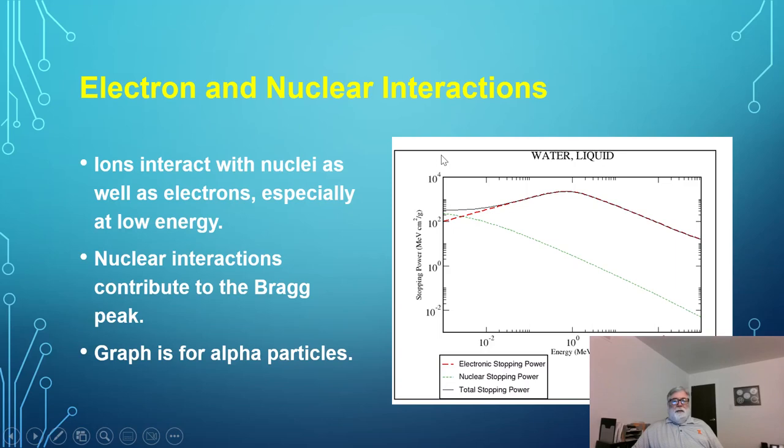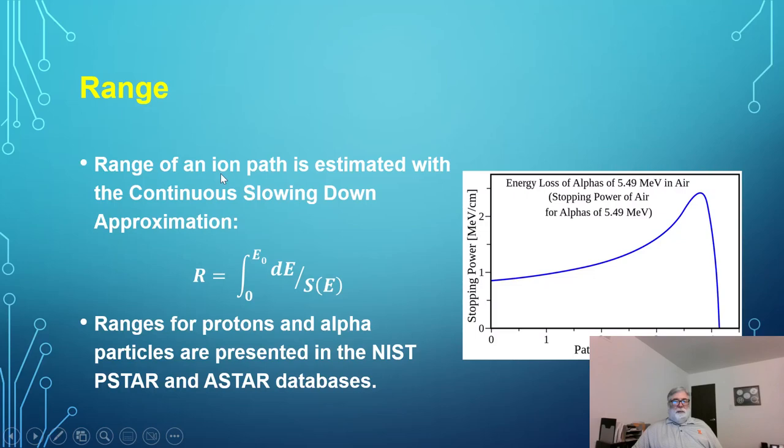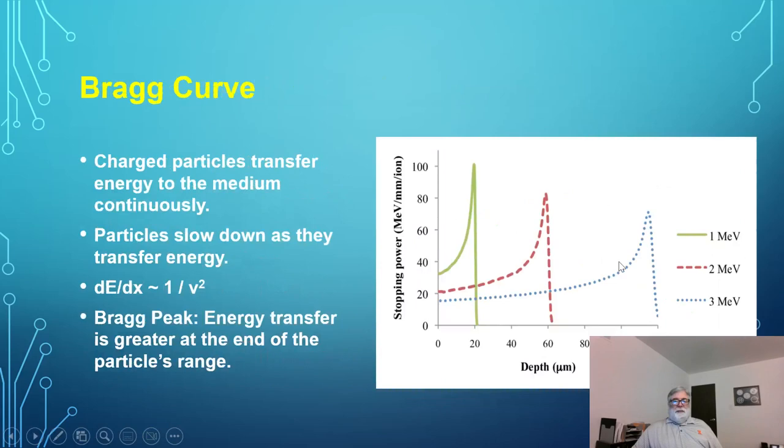Okay. This is interactions of a charged particle. I think this is an alpha particle interacting through the material. Now it interacts with the electrons. That's the red dashed line. So at higher energies, it interacts almost entirely with the electrons. At very low energies, the nuclear interaction is right here. There's an electric force, an electric interaction, or an interaction with the nucleus. And it's actually greater than the electron interactions at very slow speeds. So that contributes to the Bragg peak.